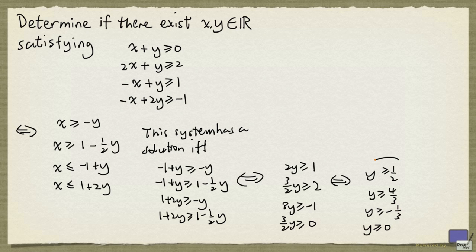So notice that this system does not contain the variable x. And this system has a solution if and only if the original system here has a solution. But clearly, there's a solution here. We can just set y to something bigger than all these numbers on the right-hand side. And in particular, we can set y equal to 2.